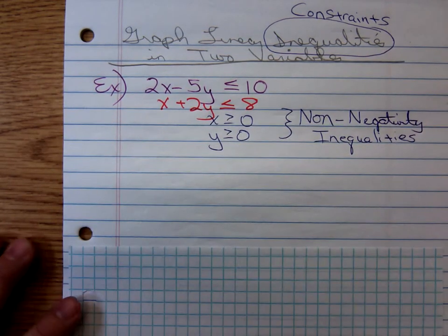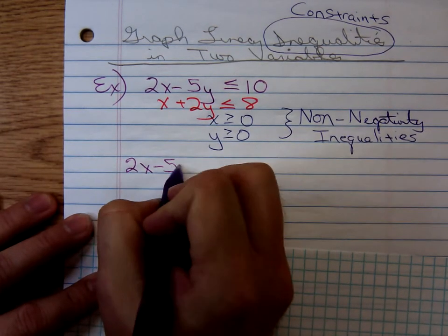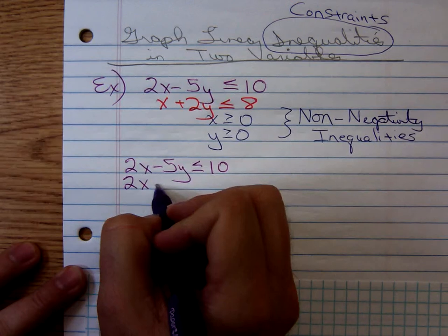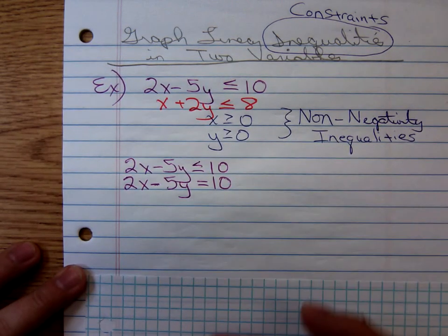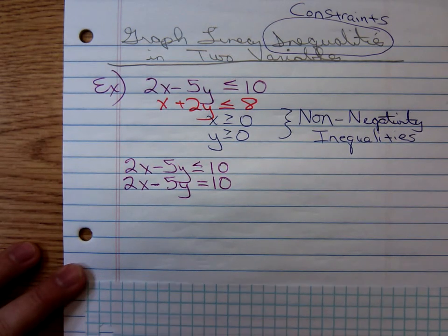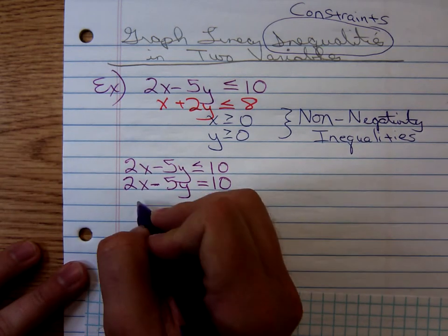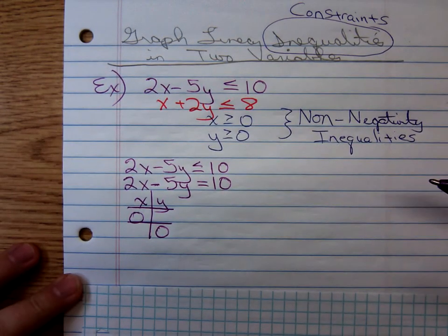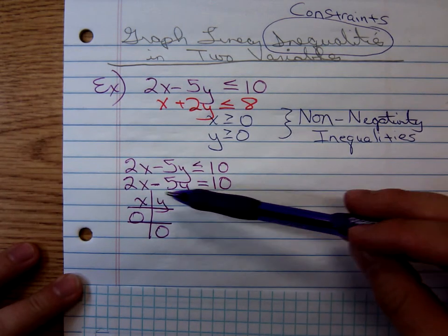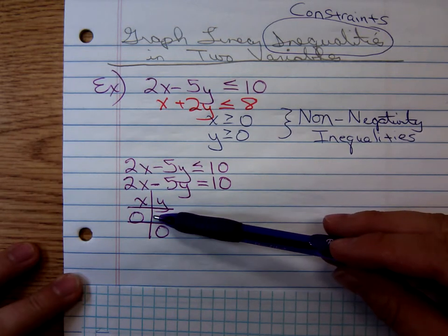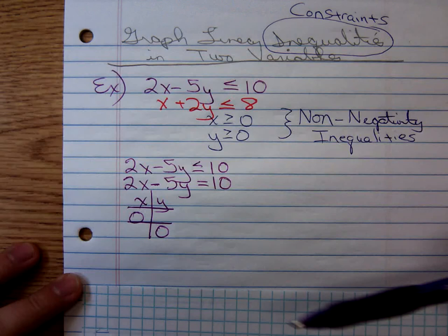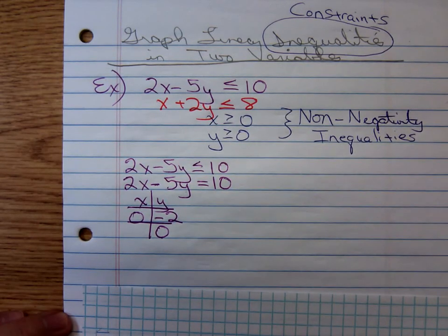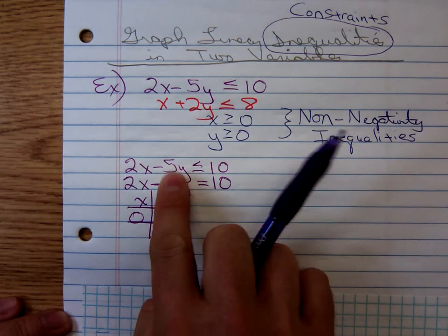The first thing we'll do, we're going to graph 2x minus 5y is less than or equal to 10. To graph that inequality, the first thing you do is graph a boundary line: 2x minus 5y equals 10. Pretend instead of a less than or equal to, you just had an equal to. That's a line. We're going to graph the line just by finding intercepts. Plug in 0 for x, you'll have negative 5y equals 10. What does y need to equal? Minus 2. Now plug in 0 for y. You'd have 2x equals 10, so x is 5.